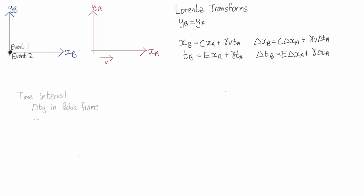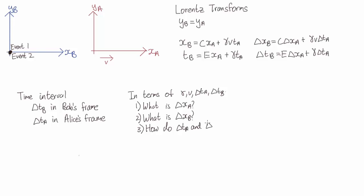The time interval between these two events is delta TB in Bob's frame and delta TA in Alice's frame. Now, in terms of gamma V, delta TA, and delta TB, what are delta XA and delta XB? And how do delta TA and delta TB relate?